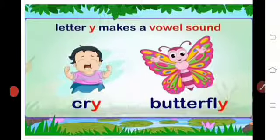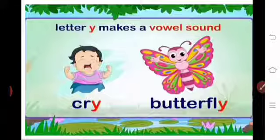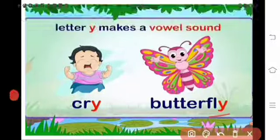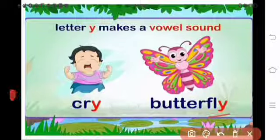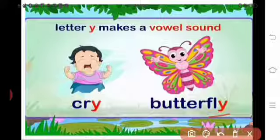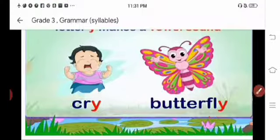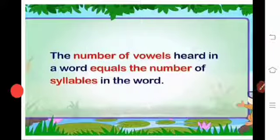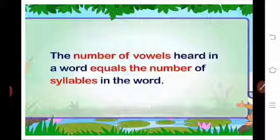Next example — 'butterfly': B-U-T-T-E-R-F-L-Y. Here Y is also a vowel sound making the 'ee' sound. The number of vowel sounds in a word equals the number of syllables in the word.